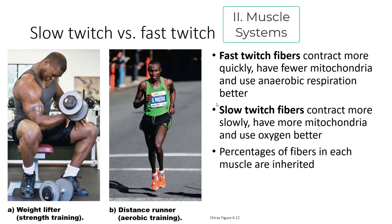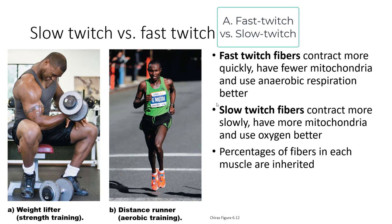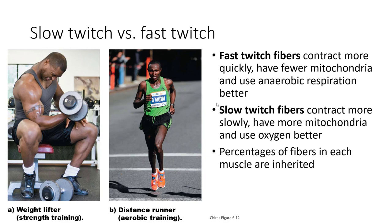Slow-twitch muscles and fast-twitch muscles are both part of muscle systems — these are different types of fibers. Fast-twitch fibers contract more quickly, have fewer mitochondria, and use anaerobic respiration. This is relevant for weightlifting; weightlifters breathe heavily between sets as they replenish energy for their fast-twitch fibers. Slow-twitch fibers contract more slowly, have more mitochondria, and use oxygen better — aerobic exercise like marathon running relies on slow-twitch fibers. The percentage of each fiber type is inherited, which is also why there is variation across species and why you have white meat and red meat.